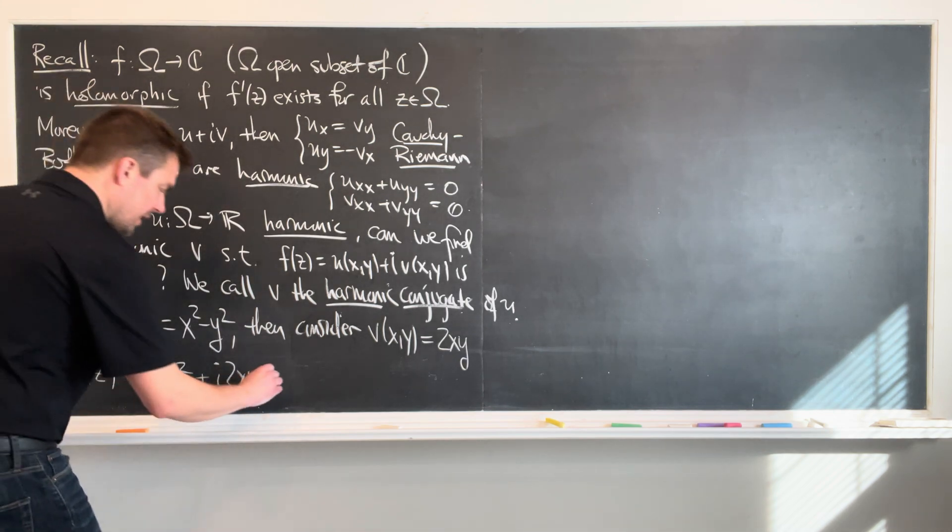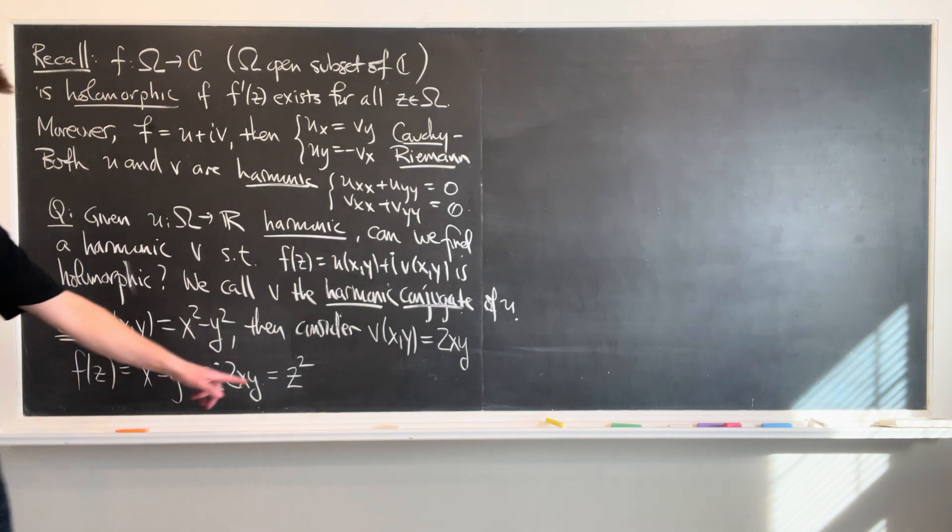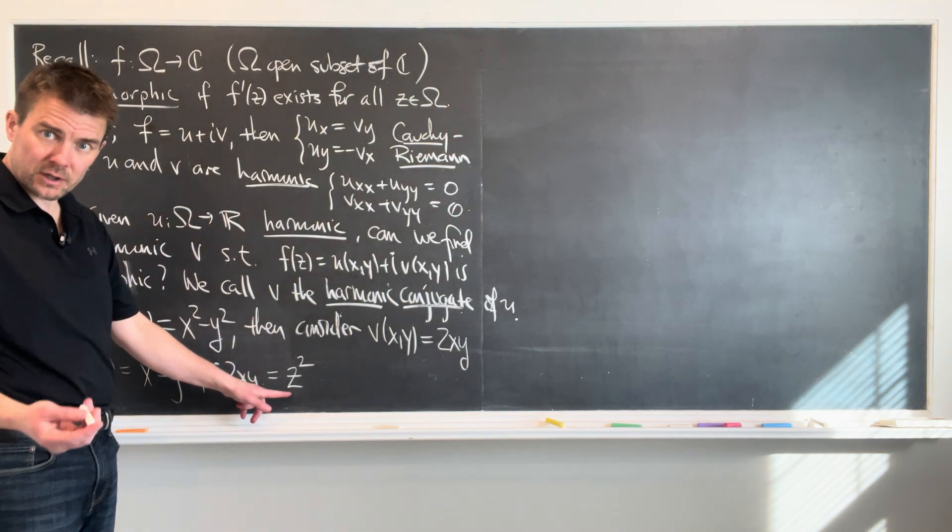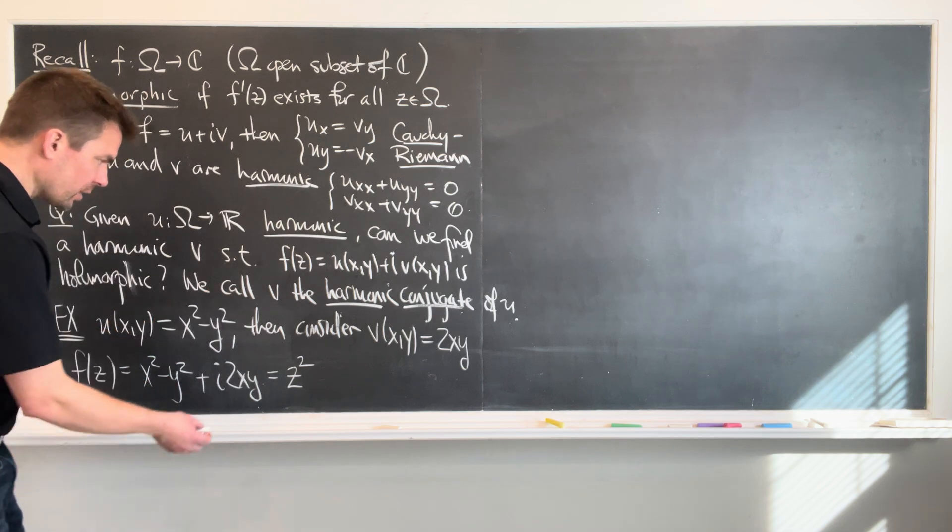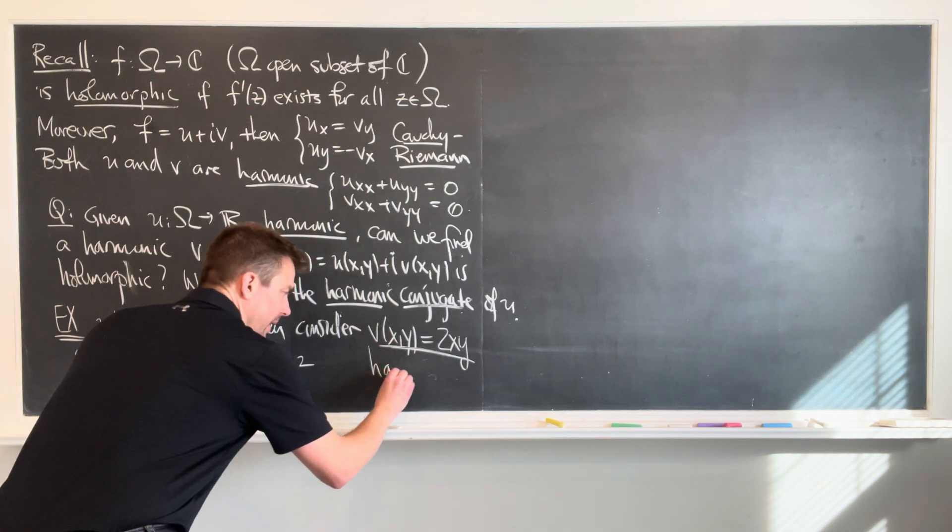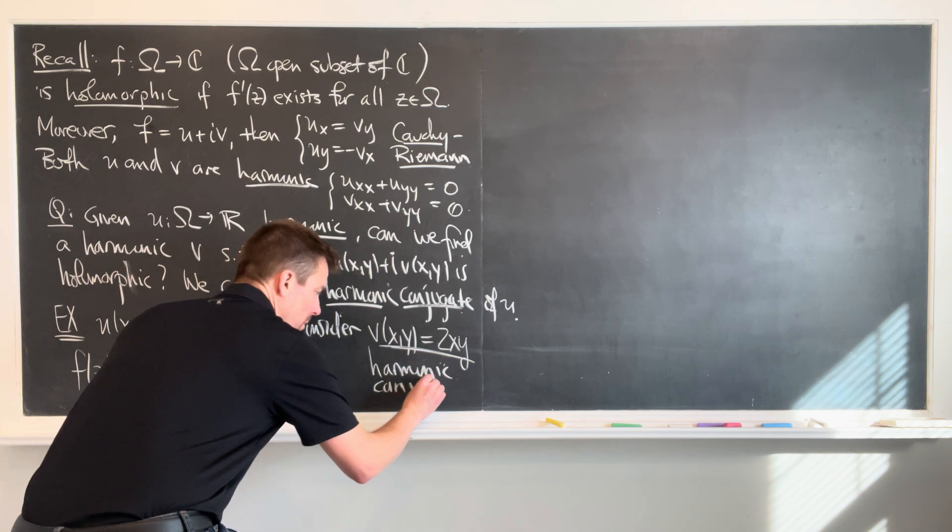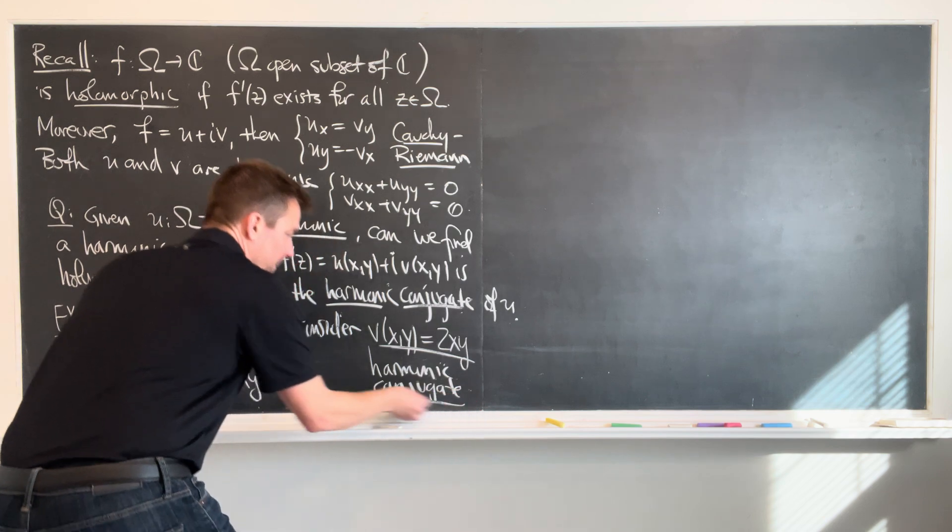Well, what is this? This is exactly just the complex number z squared. So in other words, and we know that z squared, polynomials are analytic functions or holomorphic functions. So this function 2xy is the harmonic conjugate. Beautiful.